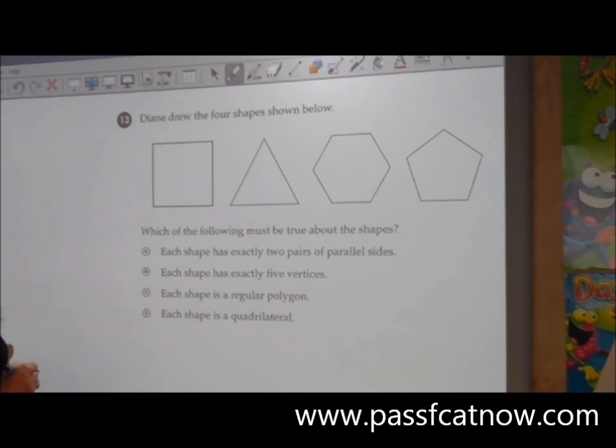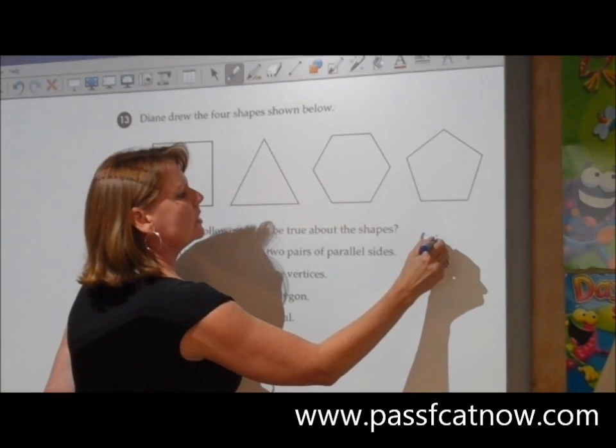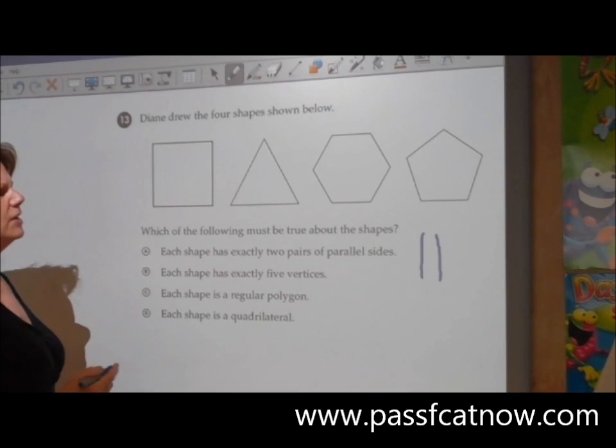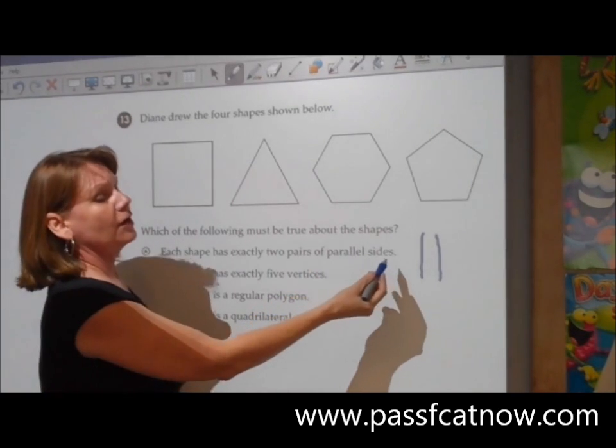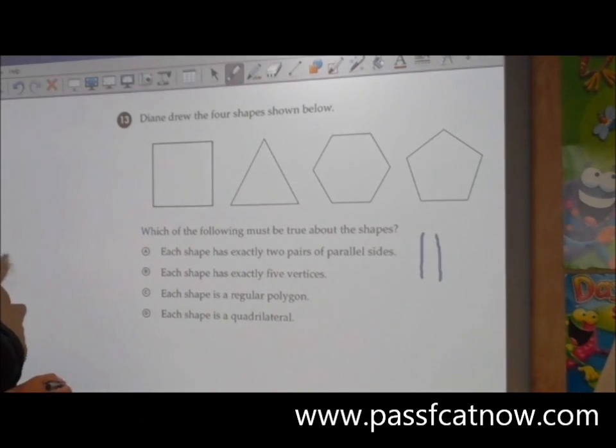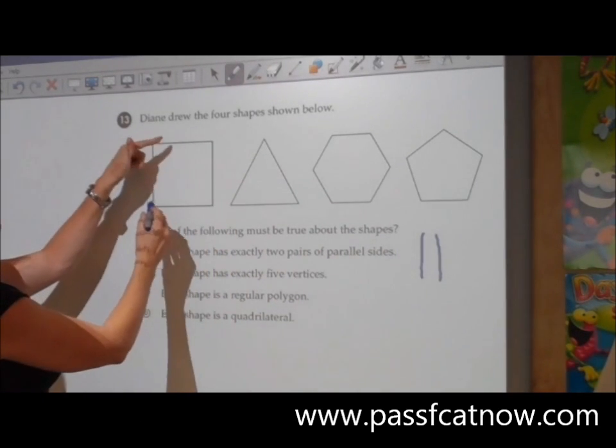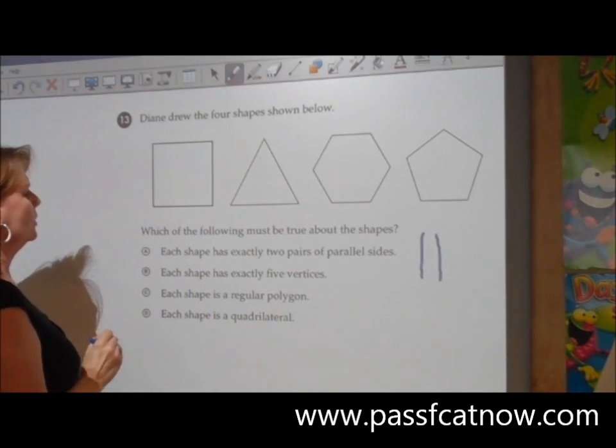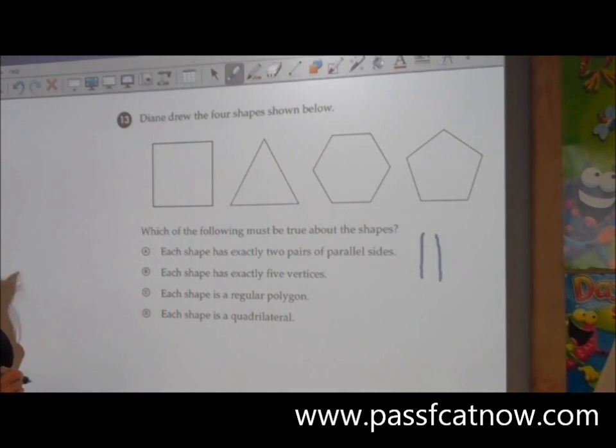Let's look at A. Each shape has exactly two pairs of parallel sides. Remember parallel means two sides that will always run together but won't run into each other. I think of it like a pair of L's. Parallel kind of sounds the same. Parallel sides, parallel sides, that works. These two run into each other so that won't work. A is not the answer.